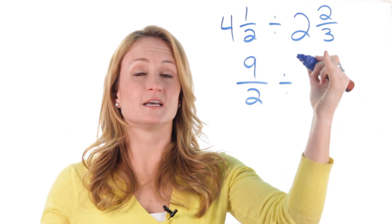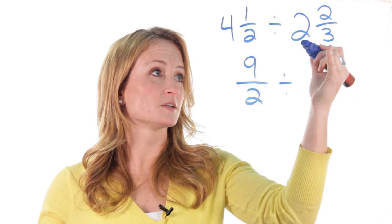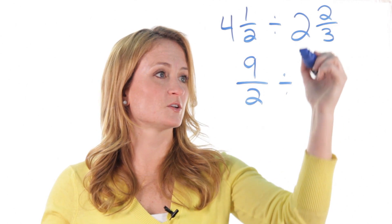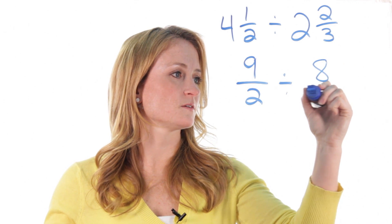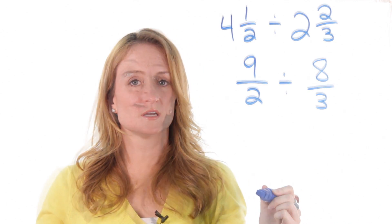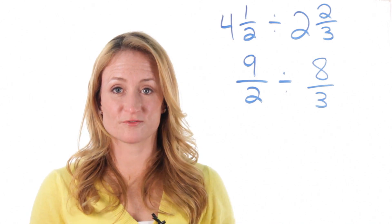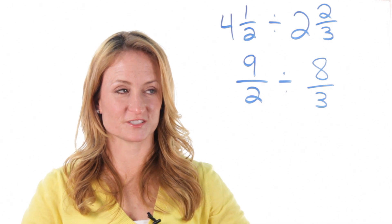Bring down the divided by sign. Do the same thing with this mixed number. 2 times 3 is 6, plus 2 is 8, over 3. We've just converted our mixed numbers into fractions, and so now it's just a division problem with fractions.